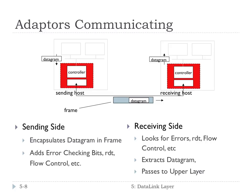How do these two adapters communicate over a link? A datagram is passed from IP in software down to the link layer controller, which encapsulates it in a frame and sends it over the link. It also adds the error-checking bits and implements the reliable data transfer and flow control protocols. On the receiving side, it checks for errors using those extra bits, handles the reliable data transfer — sending acknowledgements or asking for retransmissions — and implements flow control. When it receives a correct frame, it extracts the datagram and passes it up to the IP layer, the network layer.